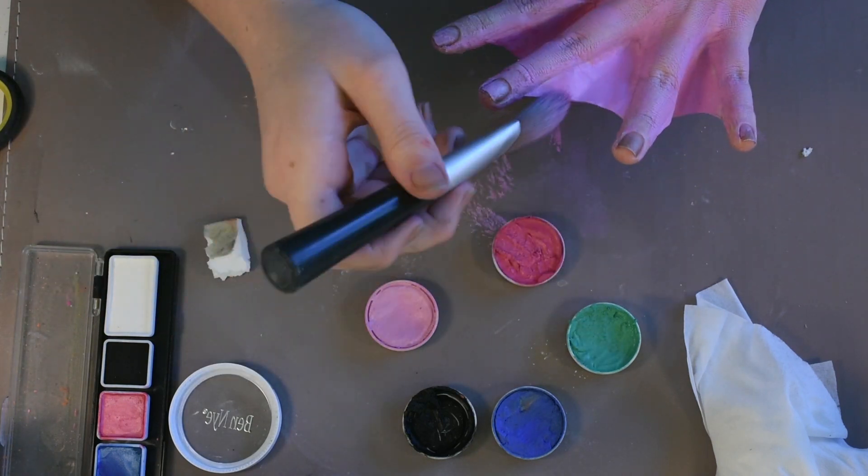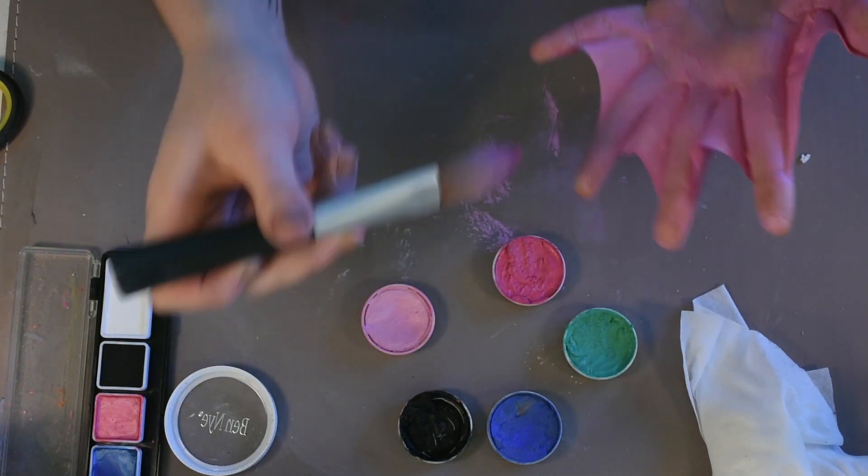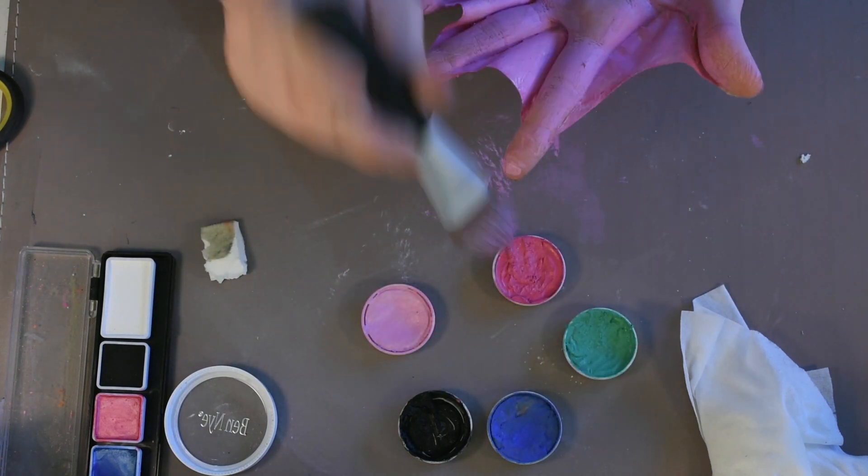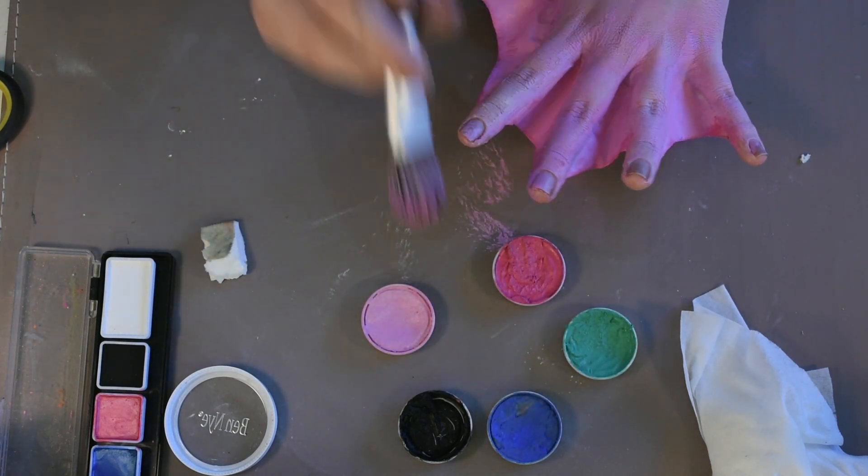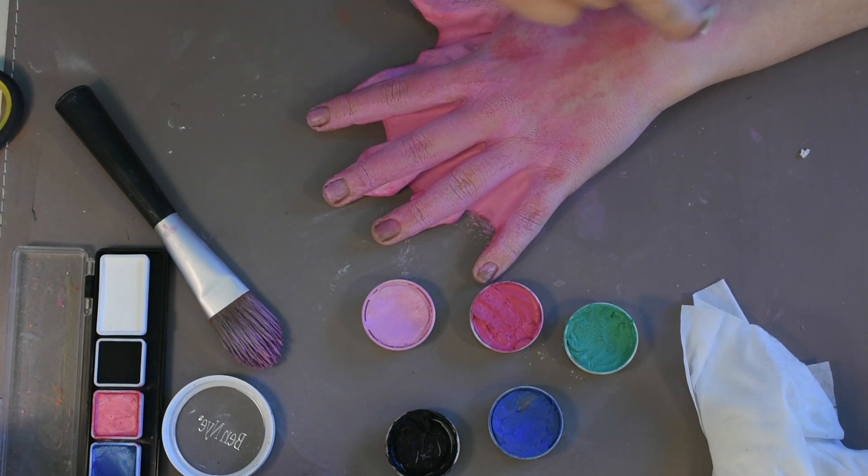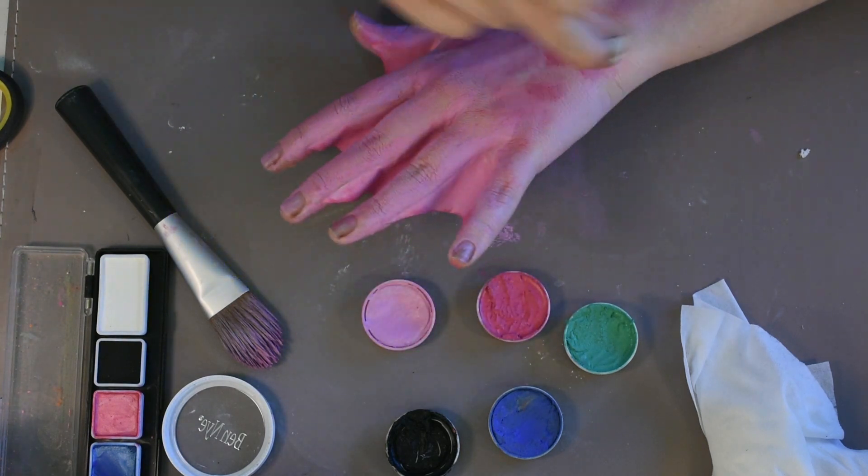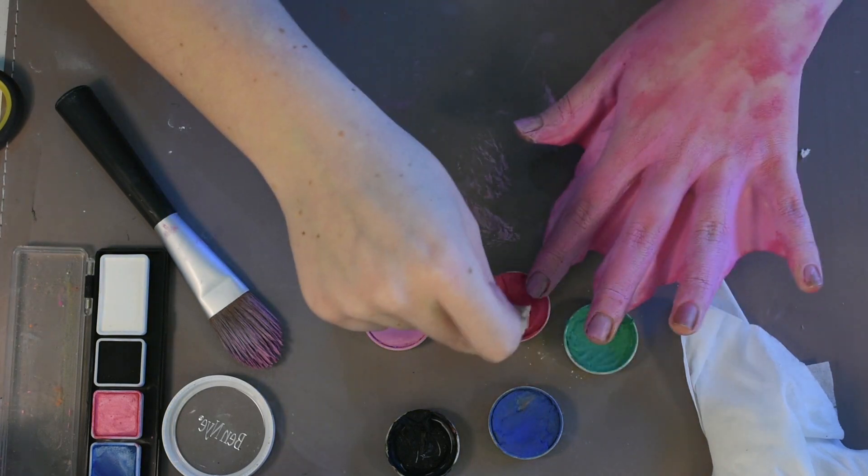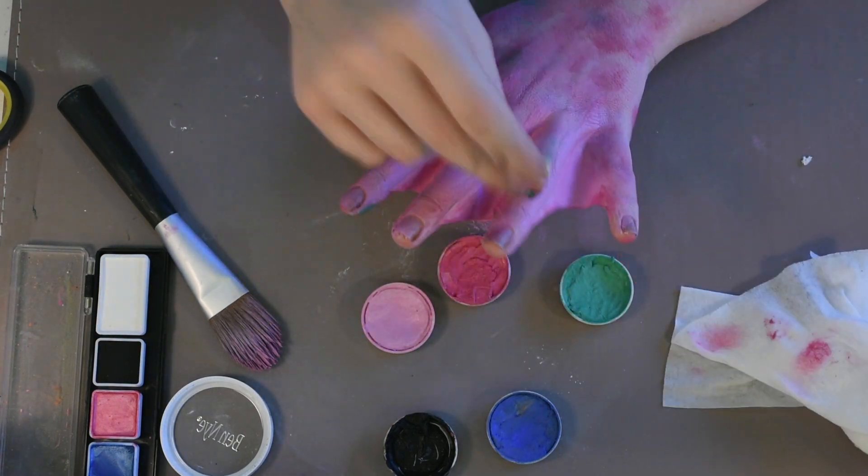Take your pre-ripped up sponge and dip it into the dark pink. Dab and swipe this wherever you see fit to help give the skin some more texture and dimension. Then take the teal color and do exactly the same thing.